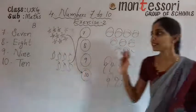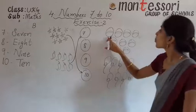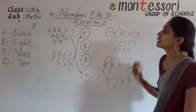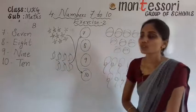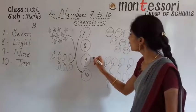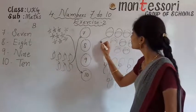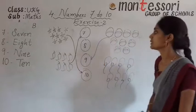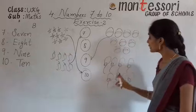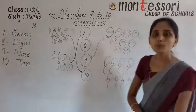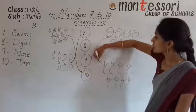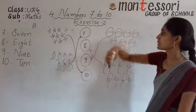Next one is balls. 1, 2, 3, 4, 5, 6, 7, 8, 9. There are 9 balls. So where is the number 9? Here it is. You have to match it to the particular number 9. Next, balloons. 1, 2, 3, 4, 5, 6, 7, 8. How many balloons are there? 8 balloons. So you have to match to the particular number 8.